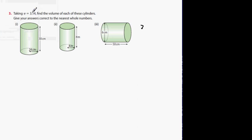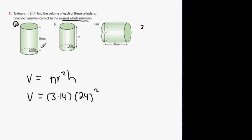Here we go. Taking pi as 3.14, find the volume of each of these cylinders. Give your answers correct to the nearest whole number. I'll do part 1. You look for the volume formula pi r squared h. Then say, it's going to be 3.14 multiplied by, what's the radius here, guys? 24 centimeters squared, and then the last one is 30.